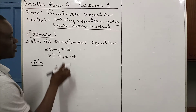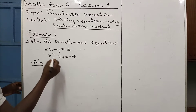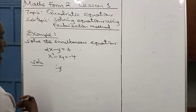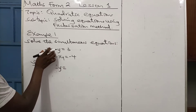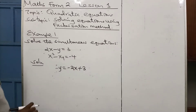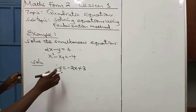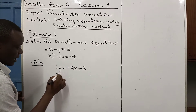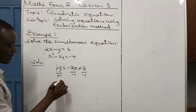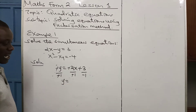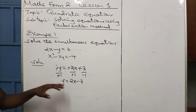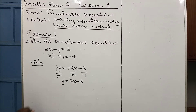You will see me making Y the subject of the formula. Since I have 2x minus y equals 3, I remain with minus y on the left-hand side. I take 2x to the right-hand side, which becomes minus 2x, plus 3. To remain with a positive y, I divide by minus 1 on both sides — the two negatives cancel, giving me y equals 2x minus 3. So I have made y the subject of the formula from the first equation.